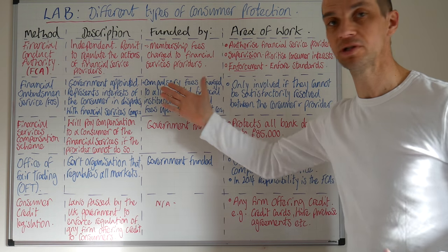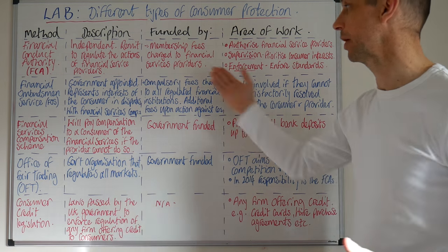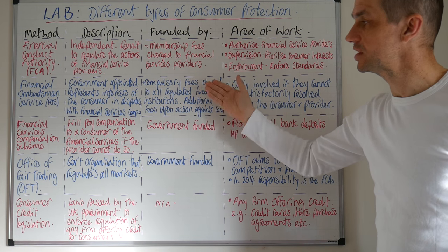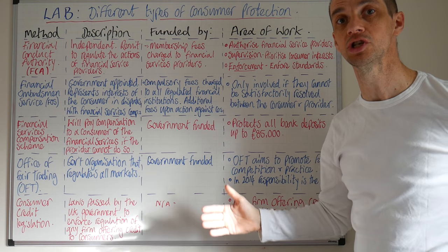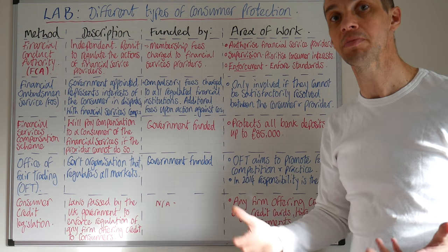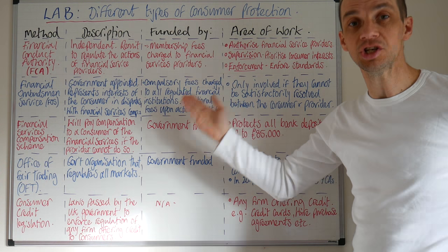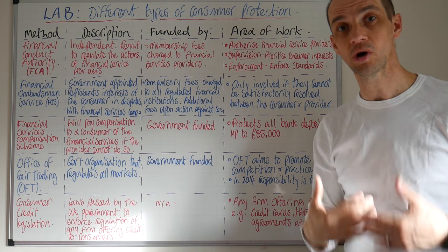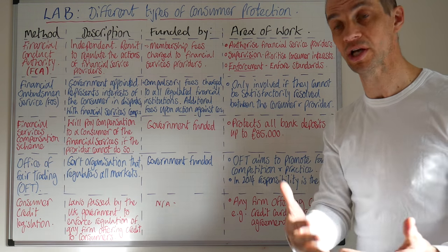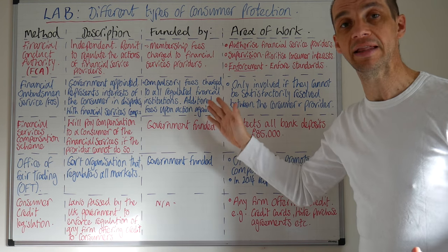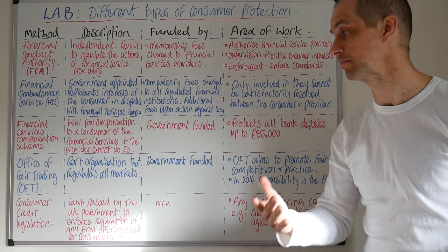The Financial Ombudsman then has a responsibility to work on behalf of that consumer. Now this is fee-based, and fees are actually charged to all financial institutions — that is really part of the make-up of the UK financial system. There could be additional fees which are actually charged against a financial services organisation in the event that they have behaved against consumer interests.